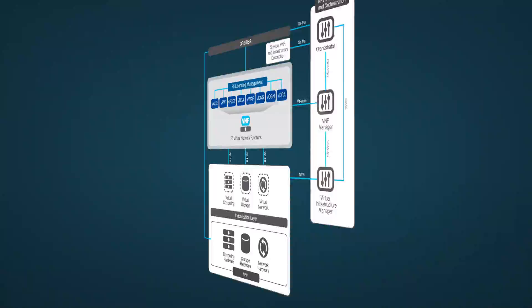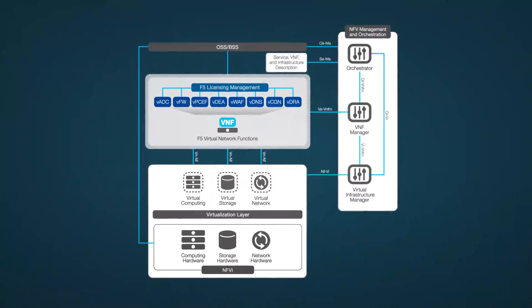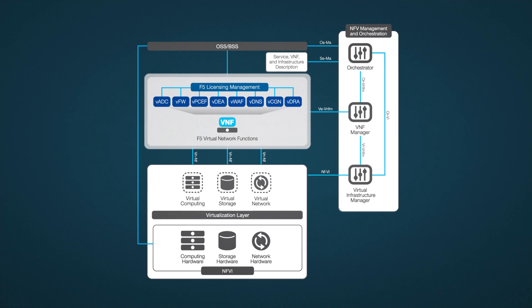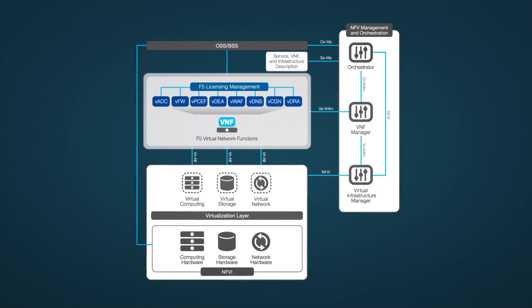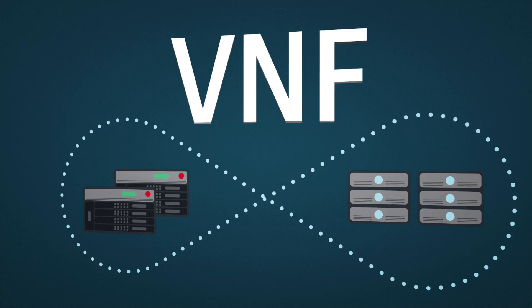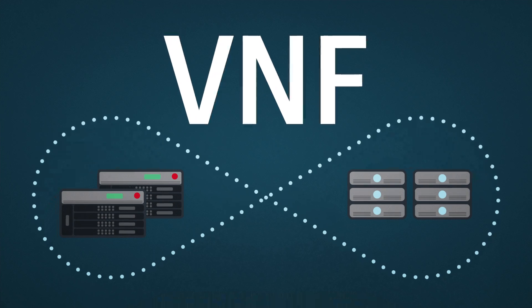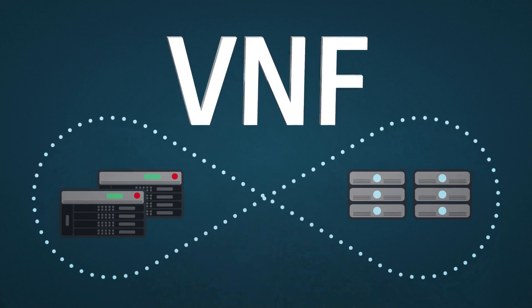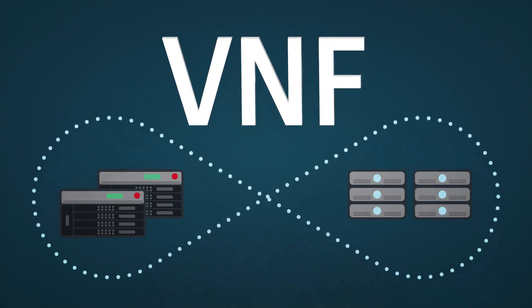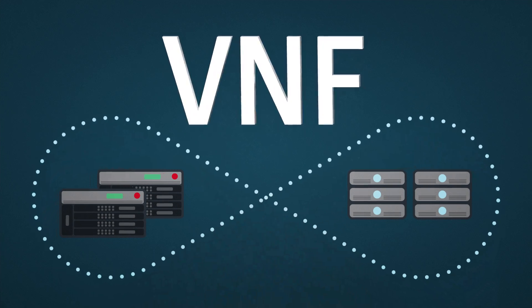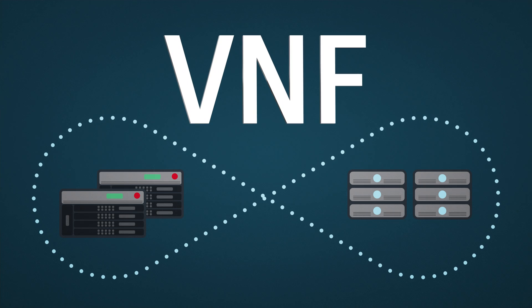This flexibility gives you a full range of choices when you migrate to NFV with F5, including the option of running your network as a hybrid where certain functions are virtualized and others remain on purpose-built hardware.